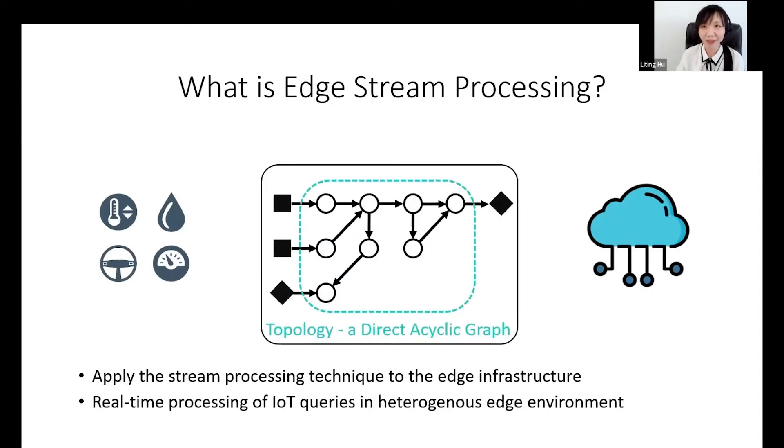So we have different thoughts. Can we apply stream processing techniques to the edge infrastructure? The key idea of edge stream processing is to move the computation from the cloud to the data sources, that is, gateways and routers for processing.